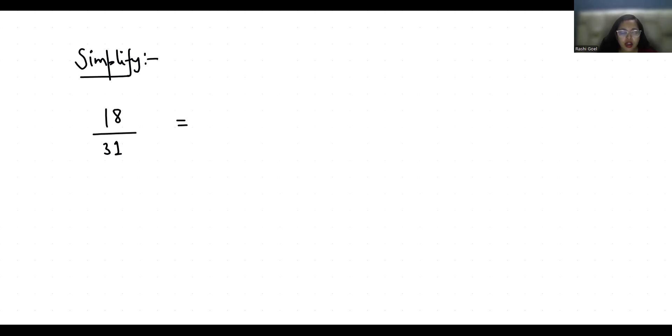To reduce this, we have to divide the fraction by their highest common factor. First, we are going to find the factors of 18 and 31.